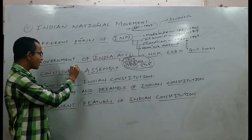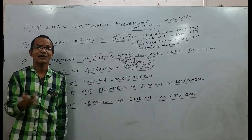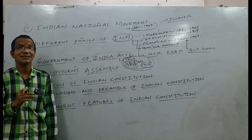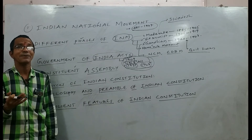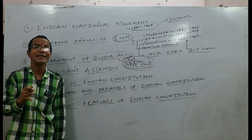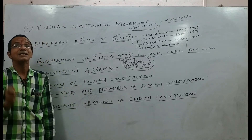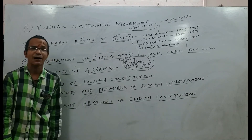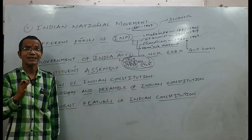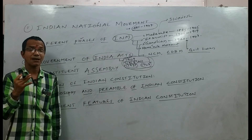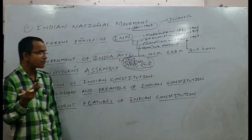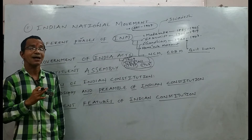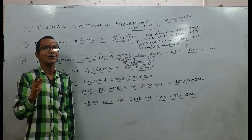The next topic is the Constituent Assembly. Our Indian Constitution was prepared by the Constituent Assembly, which was elected by the people. After long deliberations and discussions, the Constituent Assembly prepared the Constitution for India. It constituted 22 subcommittees for the preparation of the Constitution. The Drafting Committee is one of the most important committees, chaired by Dr. B.R. Ambedkar, who drafted the draft Constitution.